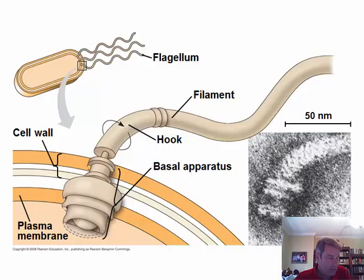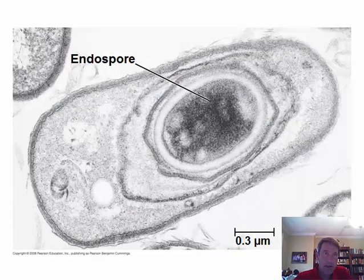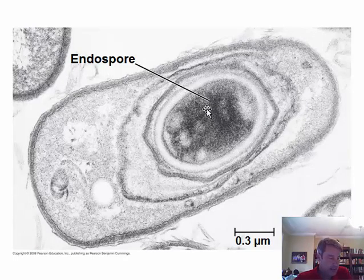Bacteria can reproduce very quickly — they can divide from one cell into two cells in about 20 minutes, so bacteria can reproduce rapidly.